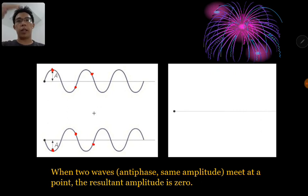When one is at the top, one is at the bottom. So they actually always chase half a cycle between each other. So as a resultant amplitude, it becomes zero.